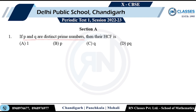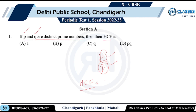Question 1: If P and Q are distinct prime numbers, then their HCF is? Since P and Q are distinct primes, the prime factorization of P is just P and of Q is just Q. There is no common factor, so the HCF has to be 1. Option A is correct.